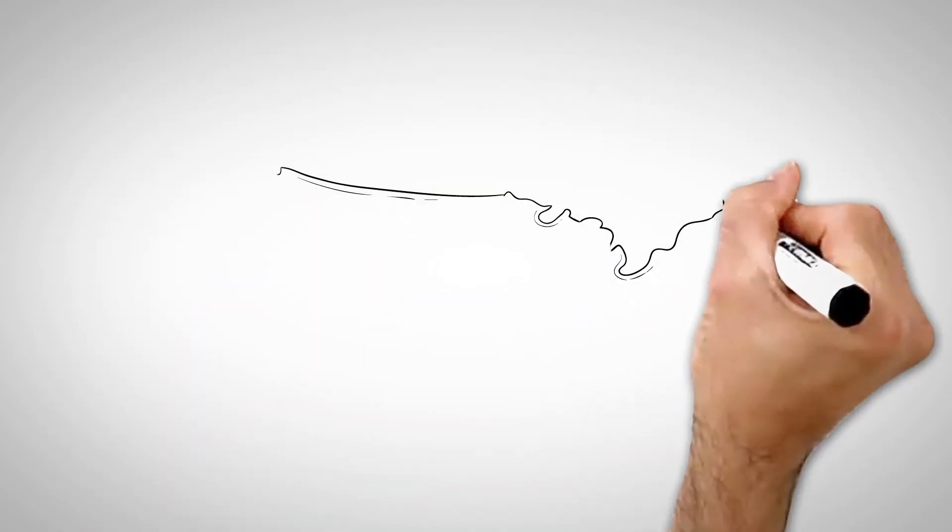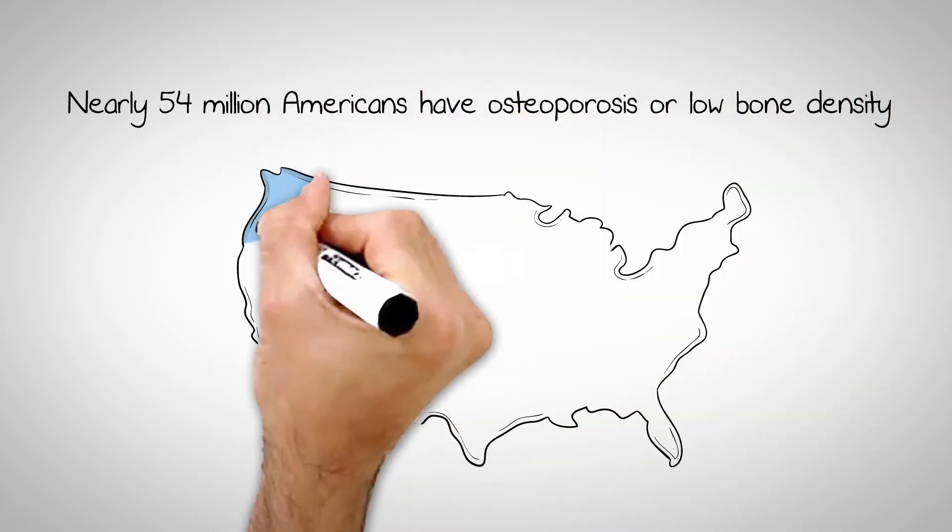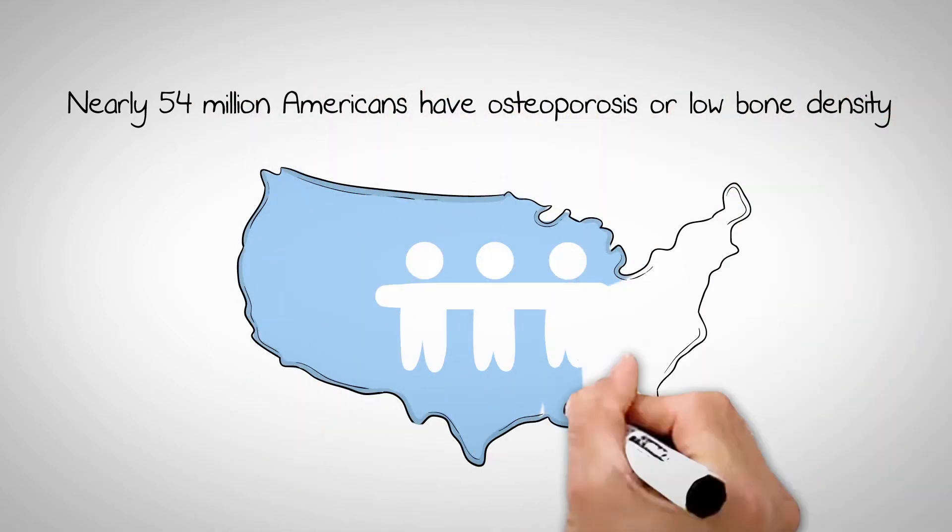At the endocrinologist's visit, Jane discovers that more than 54 million people have osteoporosis or low bone density. And although the risks are greater to those over the age of 40, people of any age can get it.